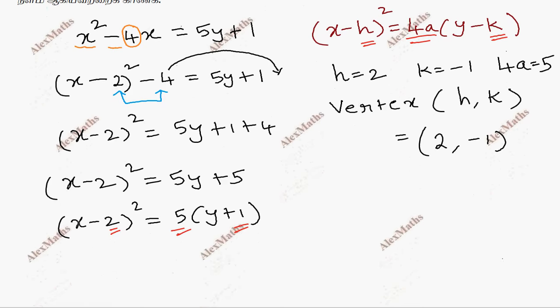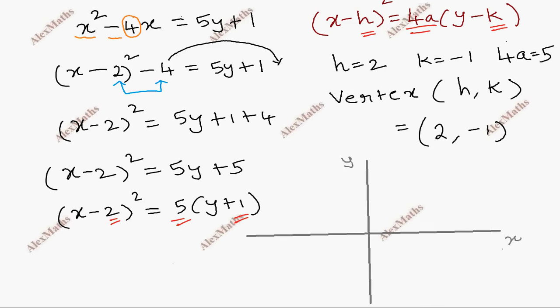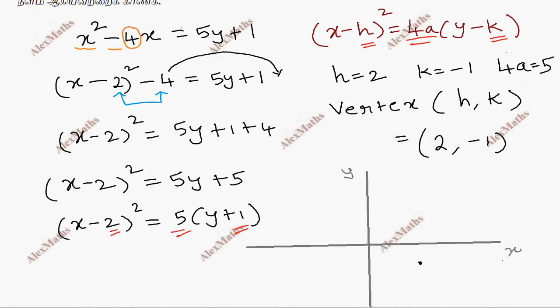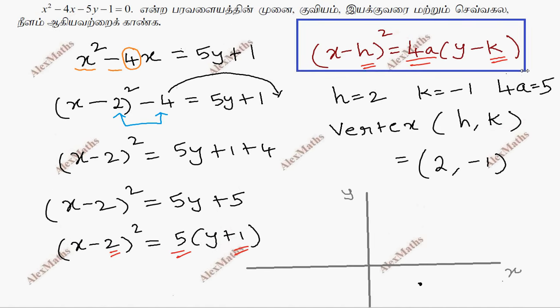Now plotting the diagram on the x-axis and y-axis. The vertex is at 2, minus 1, plotted here. As you can see from this parabola, it opens upward. So the vertex is at the bottom and the parabola opens in the upward direction.